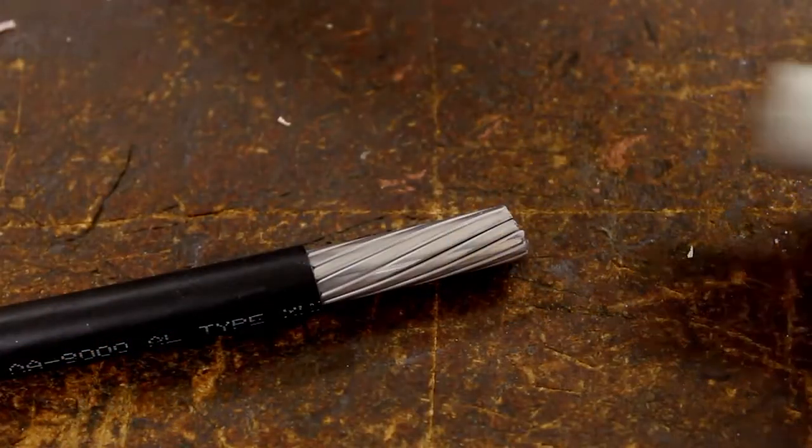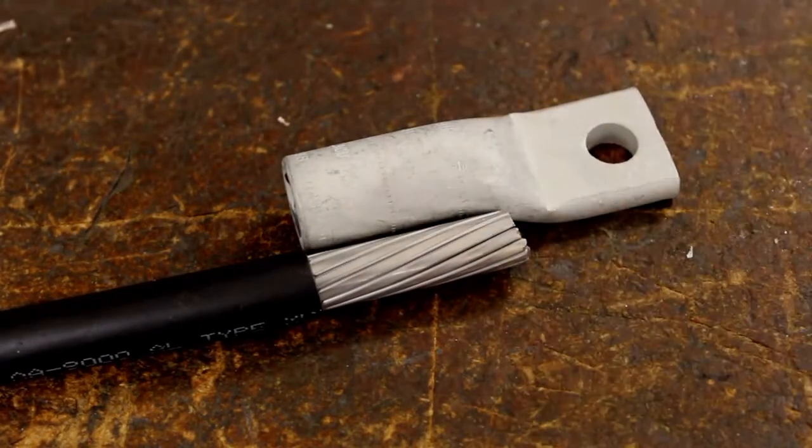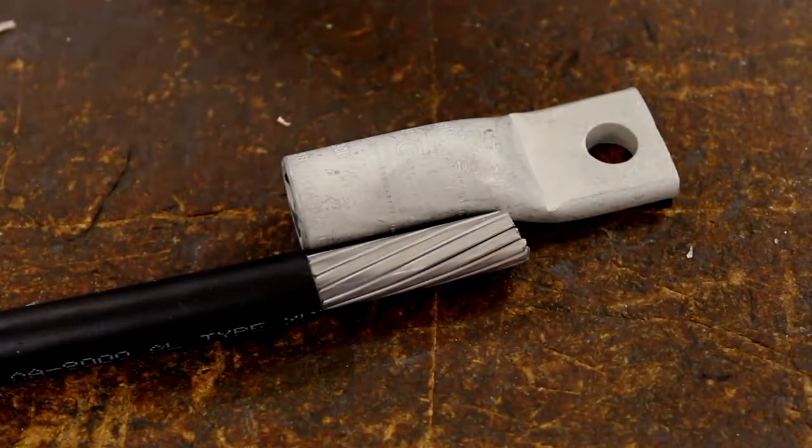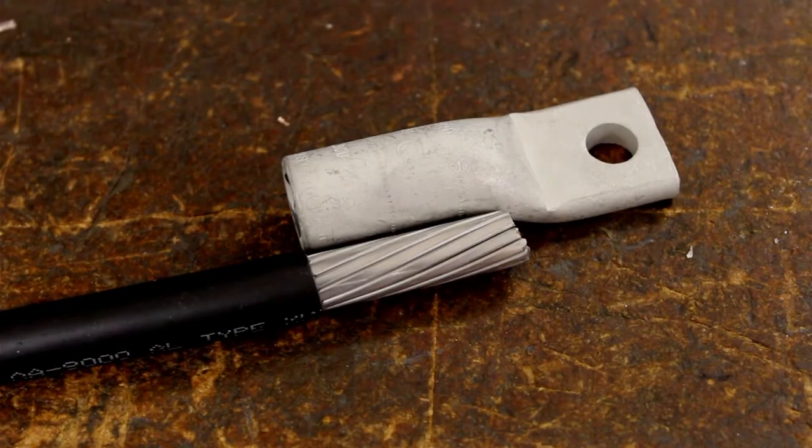Strip the cable to the needed length with a wire stripper or similar tool to cut the insulation. For better visual identification, the Burndy connector has the lettering embossed onto the barrel.